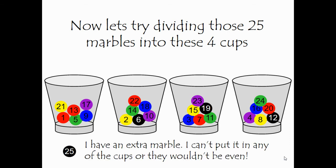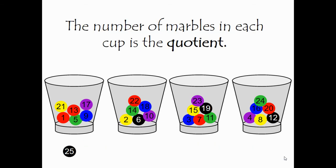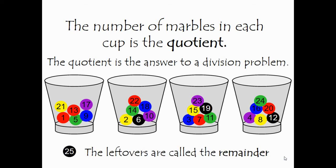The number of marbles in each cup is called the quotient. The quotient is the answer to a division problem. The leftovers are called the remainder.